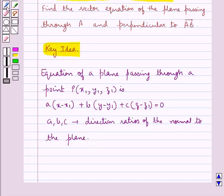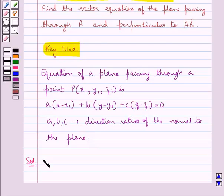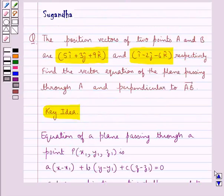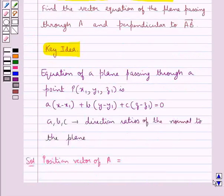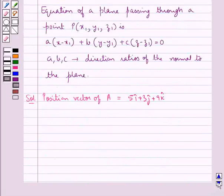Now we proceed with the solution. We are given the position vector of point A is 5i cap plus 3j cap plus 9k cap, so the coordinates of point A would be 5, 3, 9. Then we have